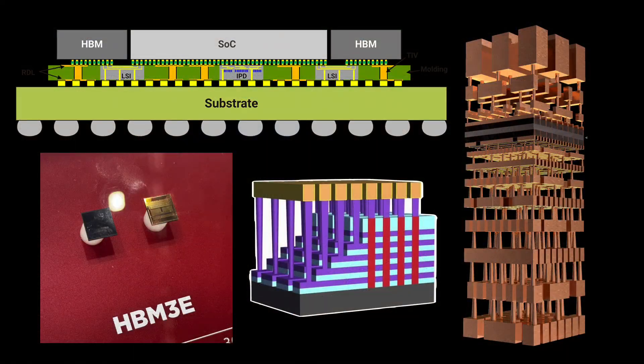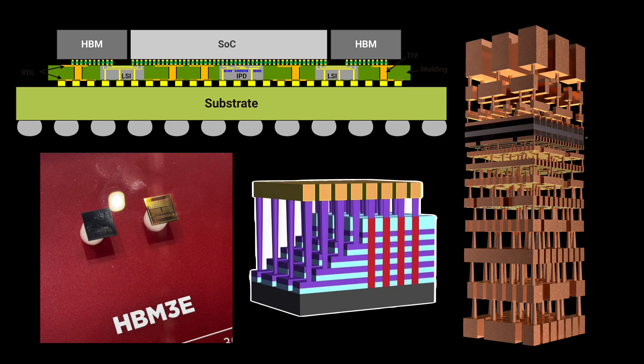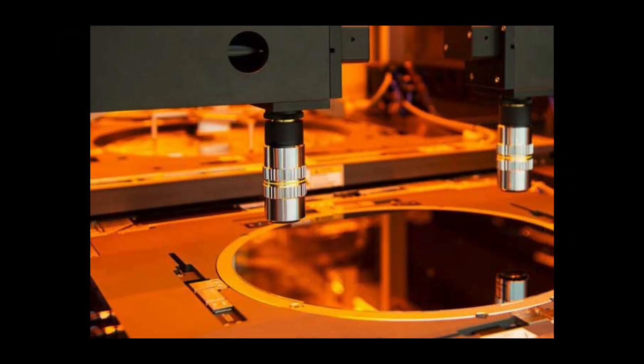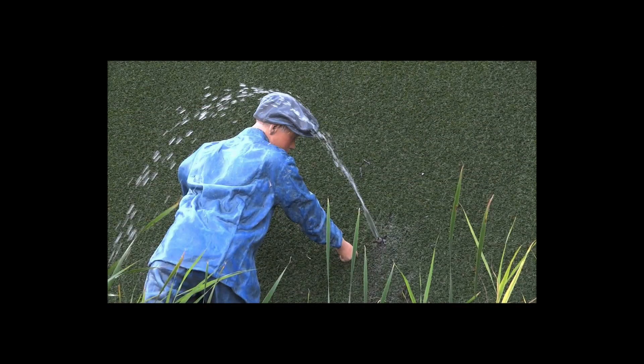COOS, backside power delivery, high bandwidth memory, 3D NAND. What do these next generation semiconductor technologies have in common? They all rely on some form of wafer bonding. Wafer bonding is low-key holding together the future of semiconductors.